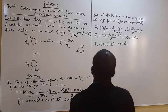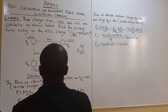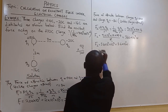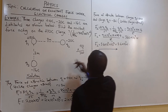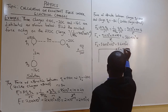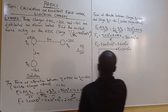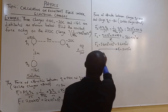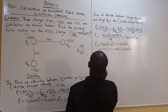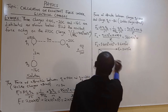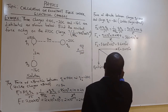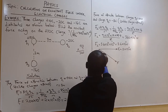Now what we need to do is find the resultant vector. F1 is 2 times 10 to the power 11 and F2 is 3.6 times 10 to the power 11. We set up the resultant diagram where F1 is along one side and F2 is along the perpendicular side, and theta is the angle.